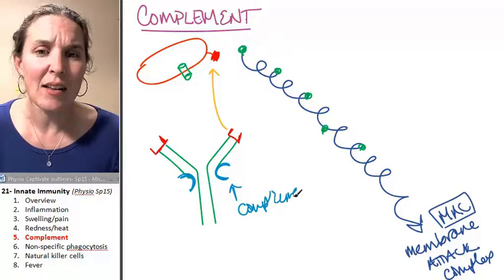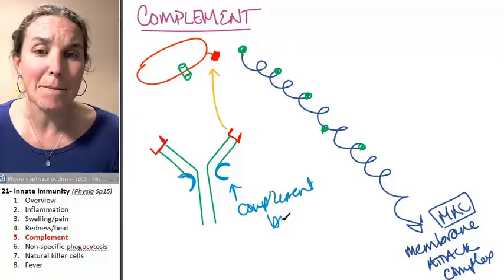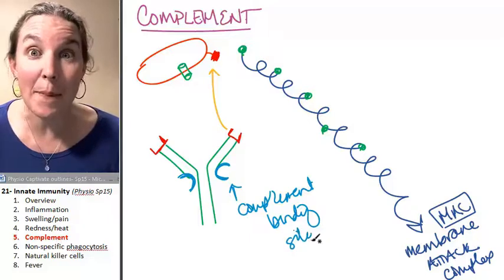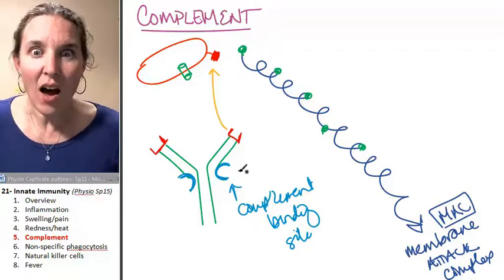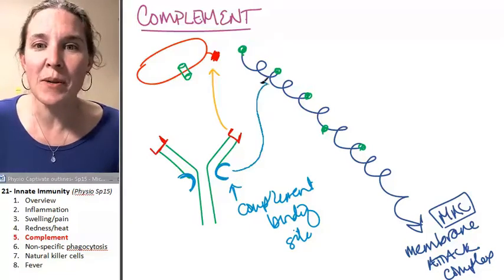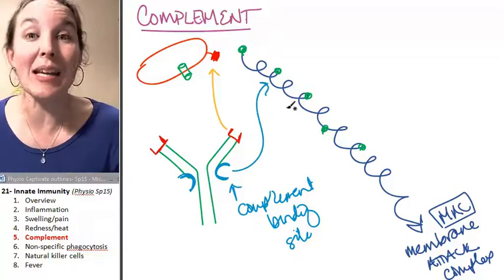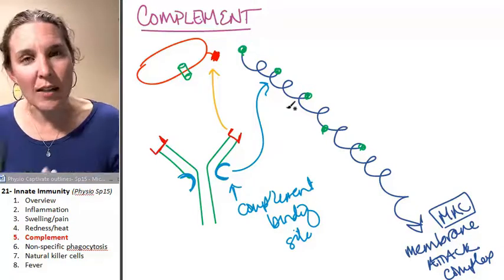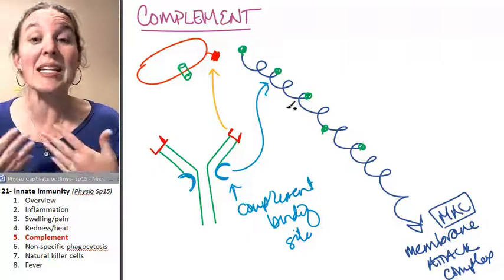that says complement binding site, it opens up and complement proteins can bind to the antibodies and can enter the cascade or stimulate the cascade to begin. So essentially, an antibody that finds its antigen can initiate complement.